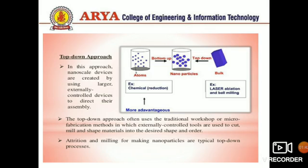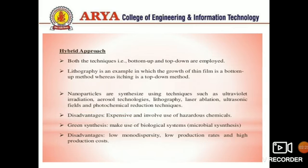In the top-down approach, nanoscale devices are created by using larger externally controlled devices to direct their assembly. The top-down approach often uses traditional workshop or microfabrication methods in which extremely controlled tools are used to cut, mill, and shape materials into the desired shape and order. Attrition and milling for making nanoparticles are typical top-down processes.